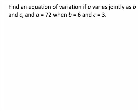Find an equation of variation if A varies jointly as B and C, and A equals 72 when B equals 6 and C equals 3.